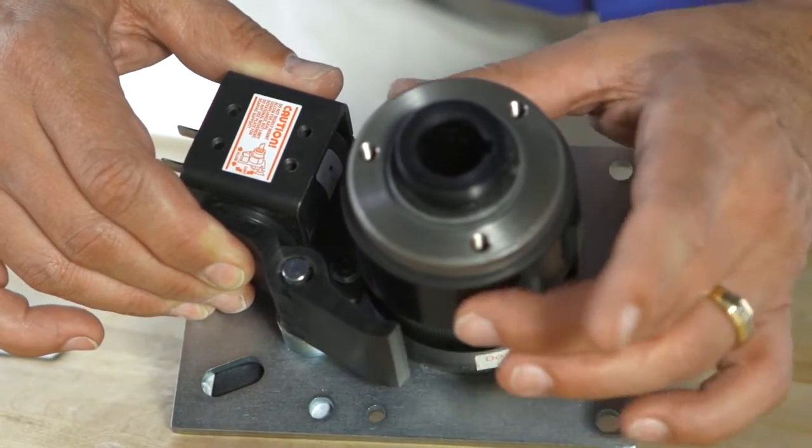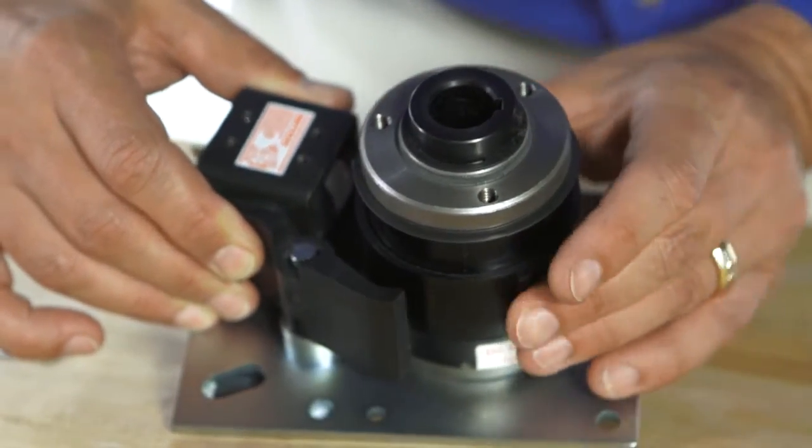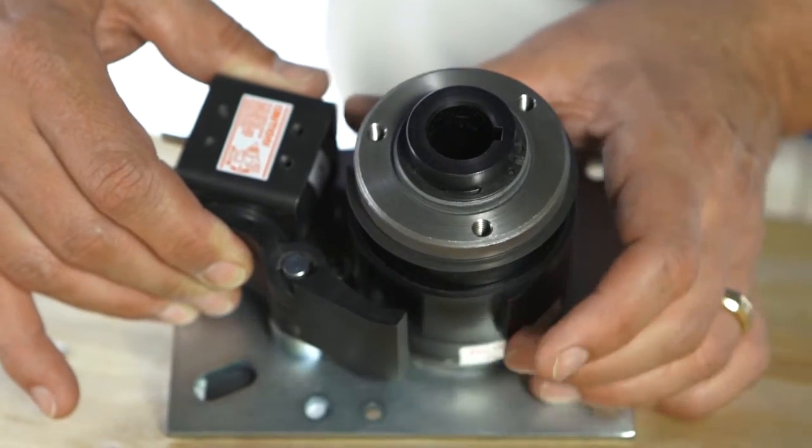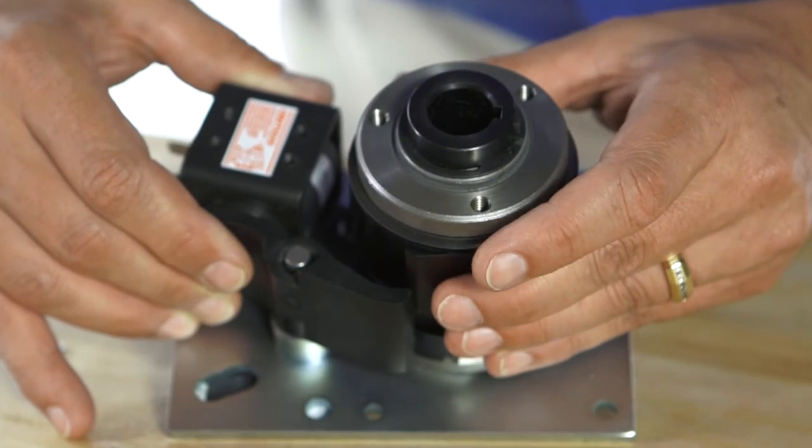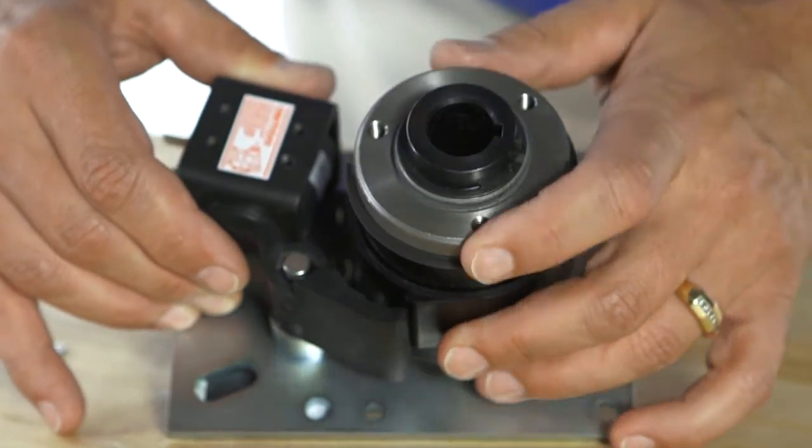Then move the control collar until the ramp begins to touch the actuator. Move down the control collar into position, then move the retainer ring back into position.